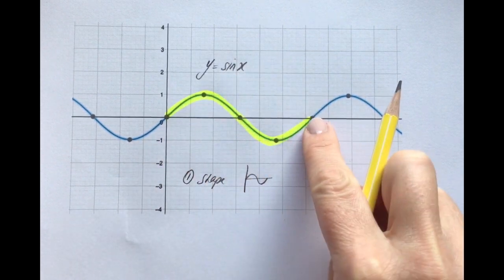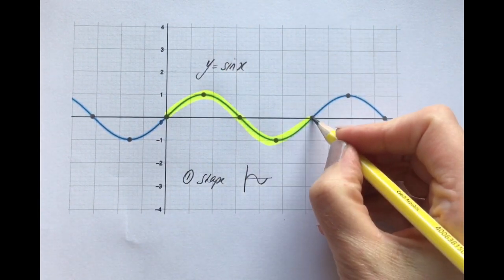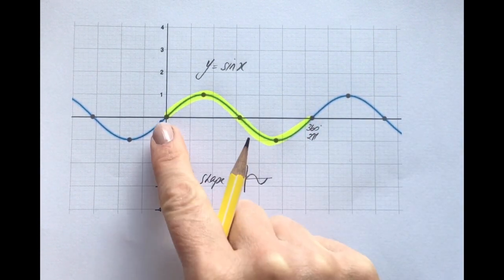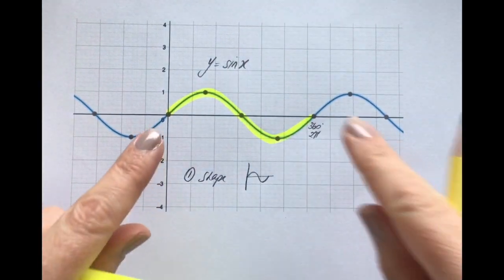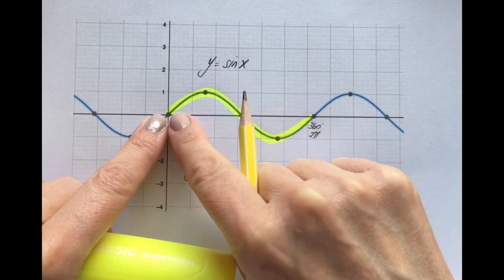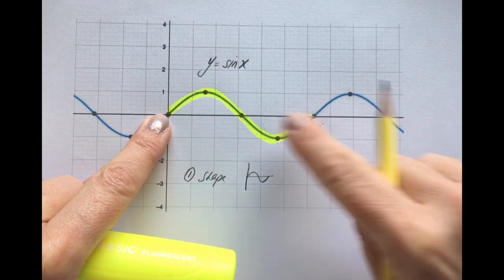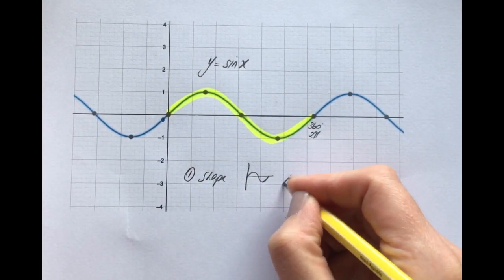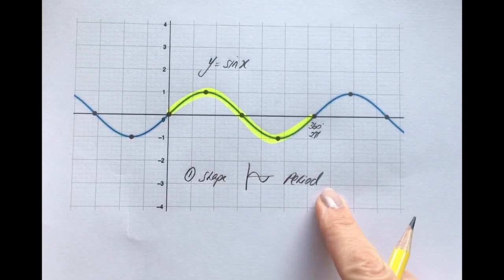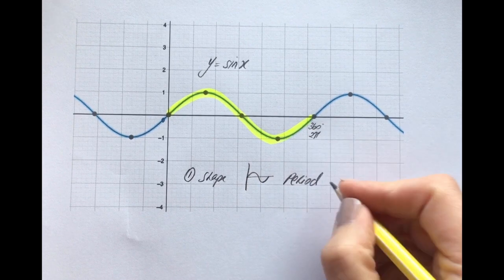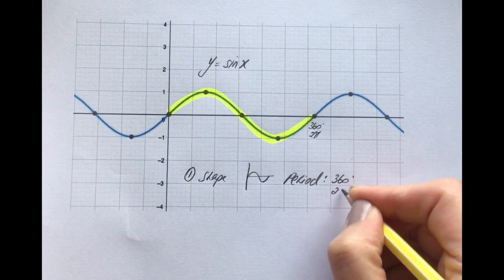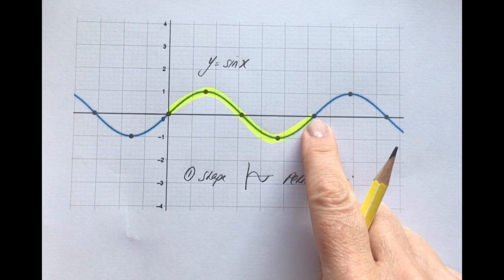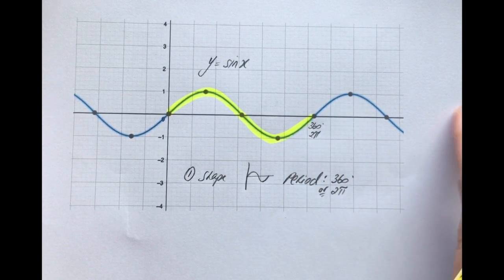Because that is between 0 and 360 degrees — or 2 pi in radians — that is what we call the period. Within that space on the x-axis between 0 and 360 degrees, that's the shape that repeats. So the sine curve has a period of 360 degrees or 2 pi, and that shape gets repeated over and over again as the curve continues.